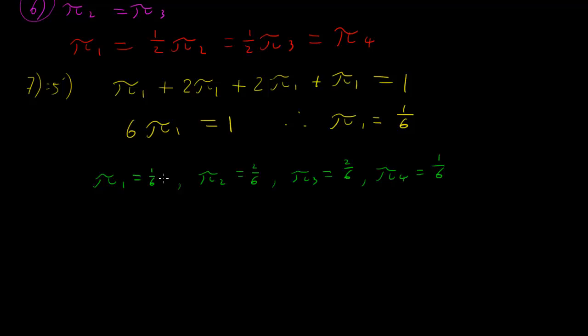We can do a quick check. Remember we said they all add up to 1. So we've got 1/6 plus 2/6 plus 2/6 plus 1/6. That's equal to 1. So that looks okay. And we now just write that out. Pi is equal to pi 1, pi 2, pi 3, and pi 4. So pi is equal to 1/6, 2/6, 2/6, 1/6. And there we go. That's our stationary distribution problem solved.